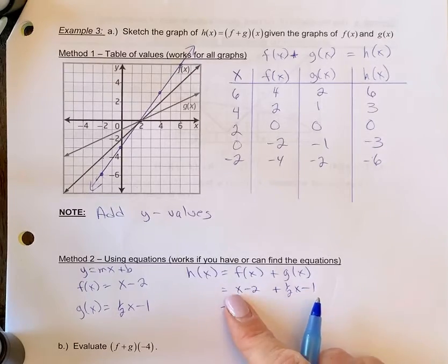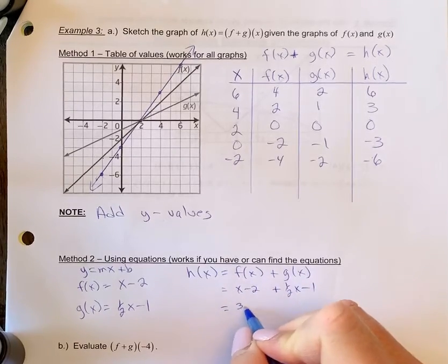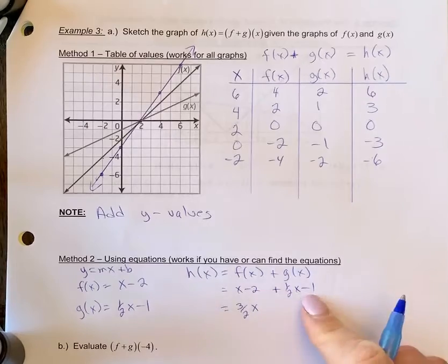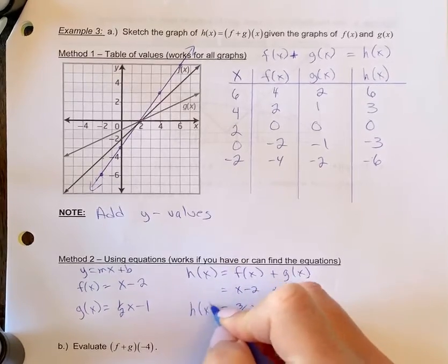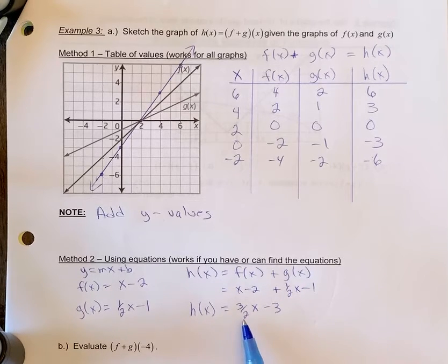So one plus one half is one and a half or three over two x. Negative two minus one is negative three. So our h of x graph is three over two x minus three.